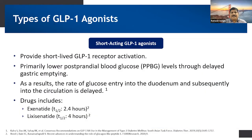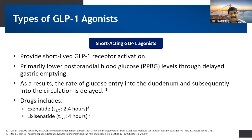Coming to the types of GLP-1 agonists: short-acting GLP-1 agonists provide short-lived GLP-1 receptor activation and lower primarily the postprandial blood glucose levels because of delayed gastric emptying. As a result, the rate of glucose entry into the duodenum and subsequently into circulation gets delayed. Examples of short-acting GLP-1 drugs are exenatide, with a half-life of 2.4 hours, and lixisenatide, with a half-life of 4 hours.